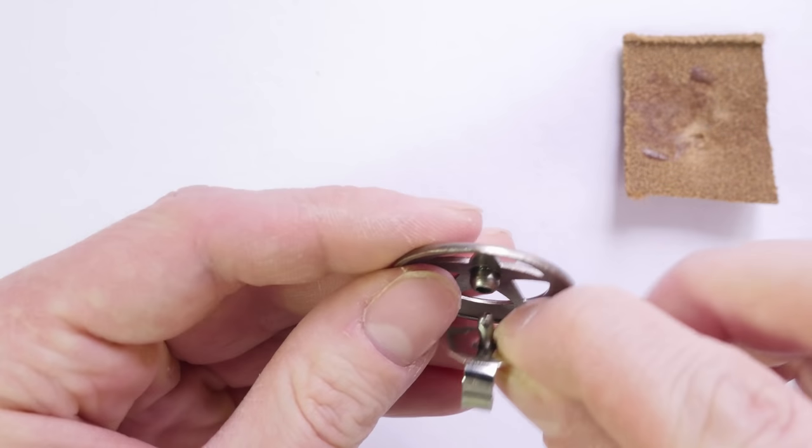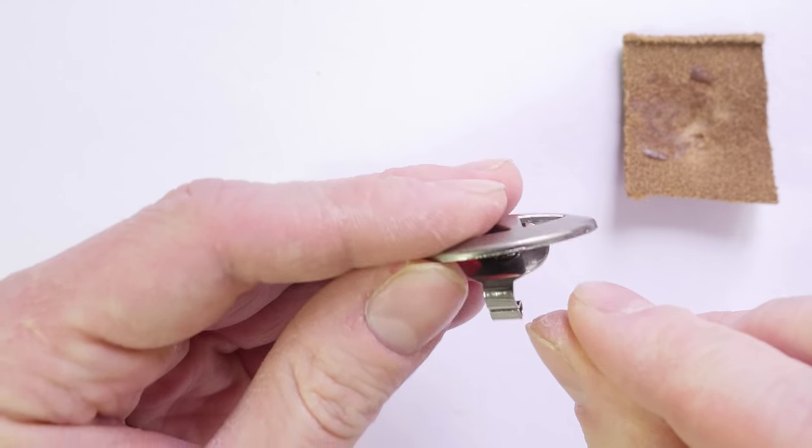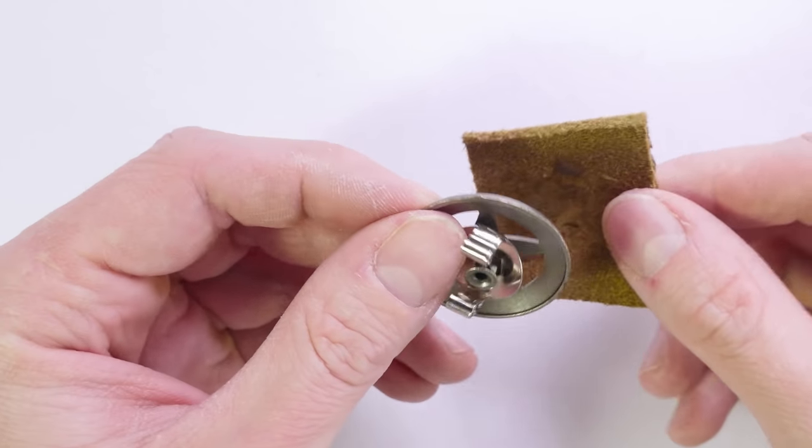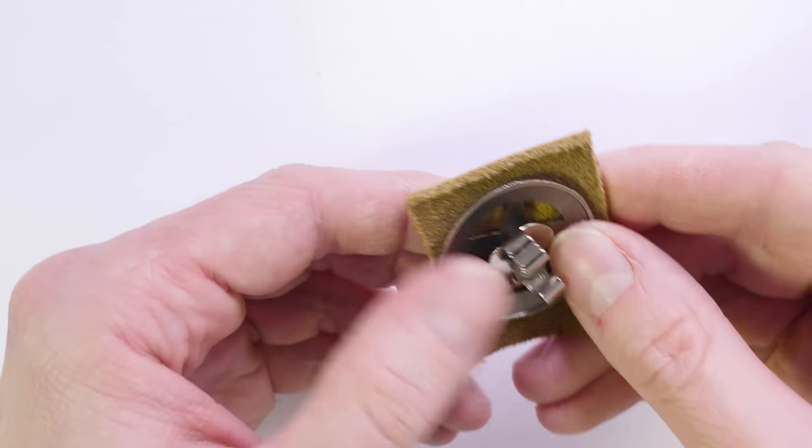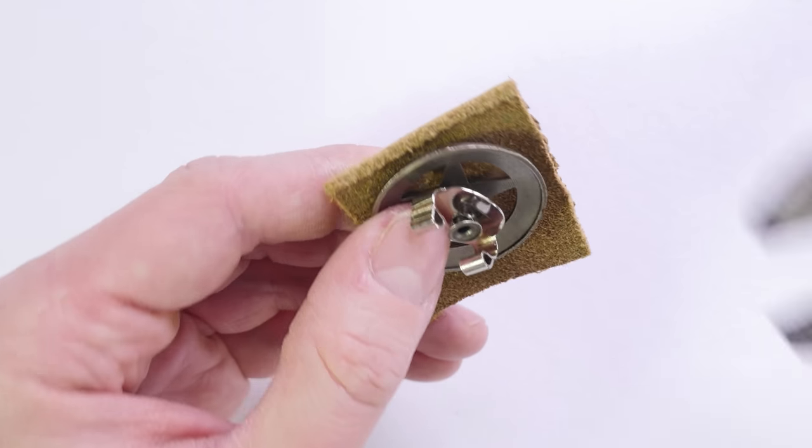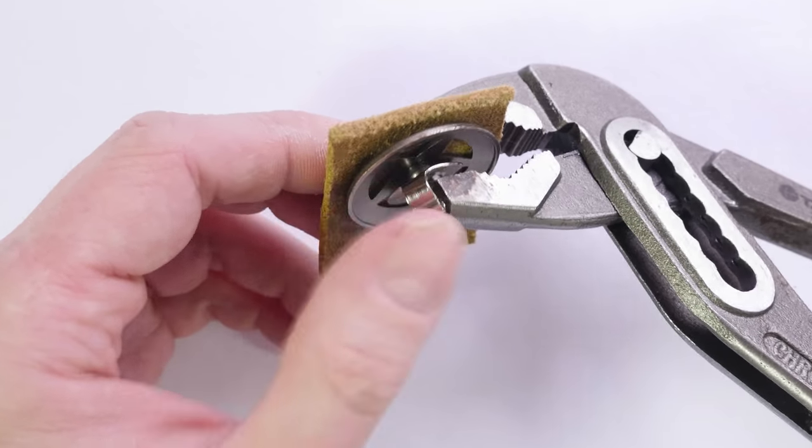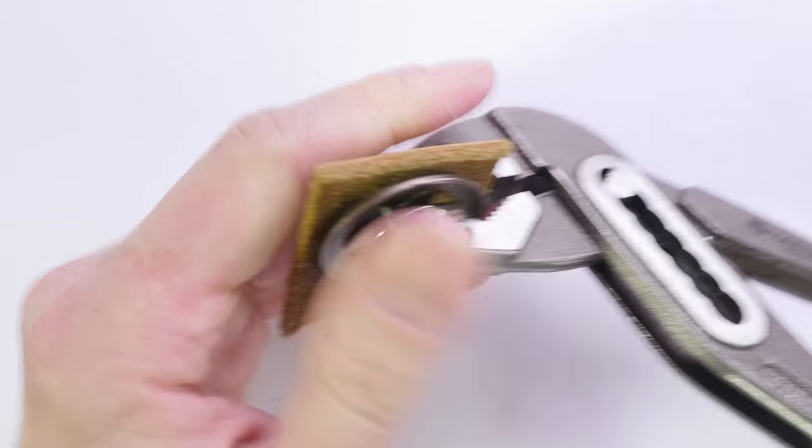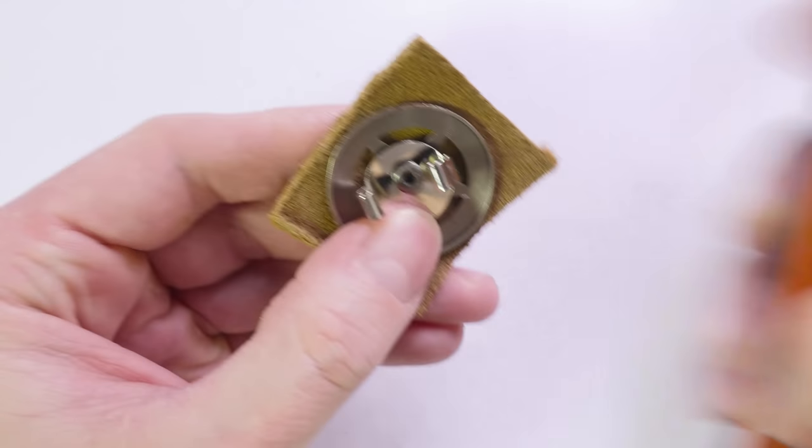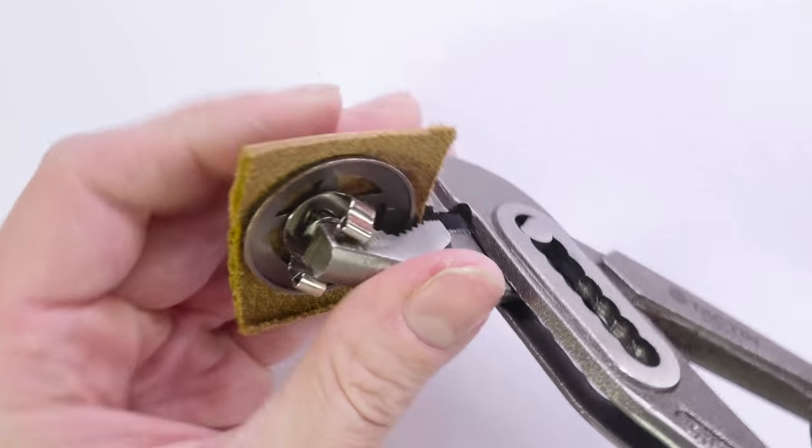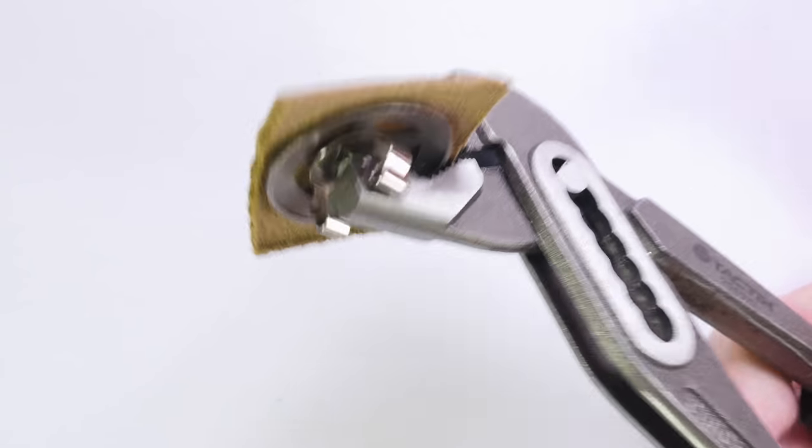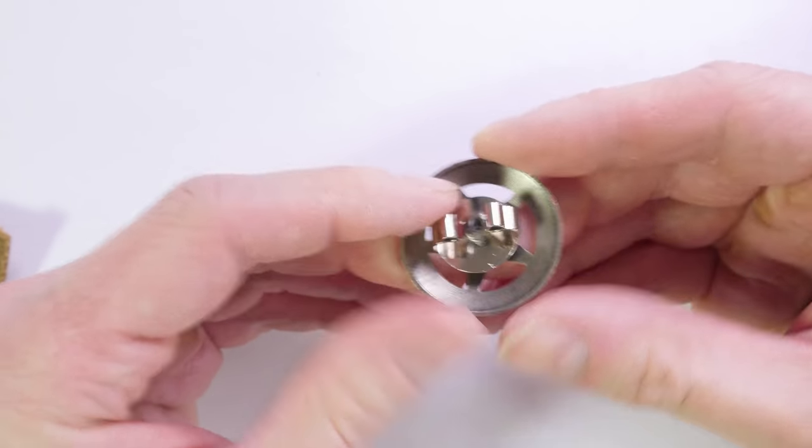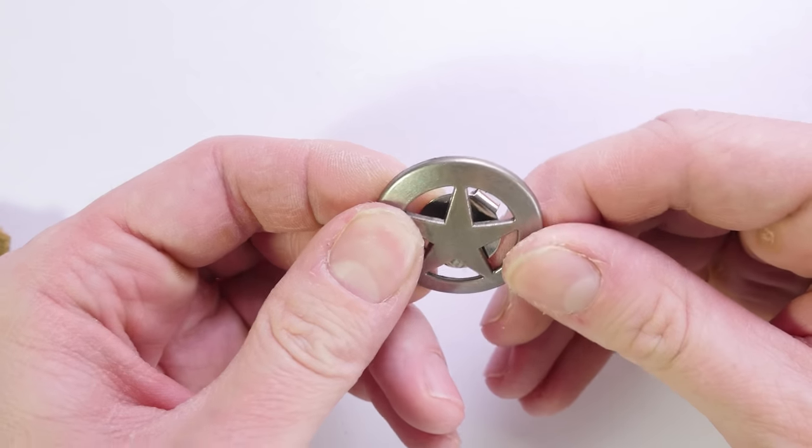Take your concho and place it on top of the rivet. Then, take a piece of leather, cardboard or paper and place it on top of the concho to protect it. Finally, apply some pressure onto the rivet, basically squeezing it into place. Now, our slide and concho are connected and ready to be used.